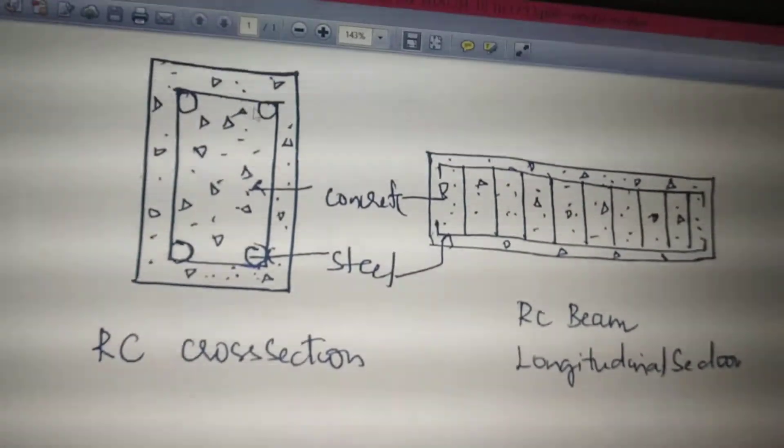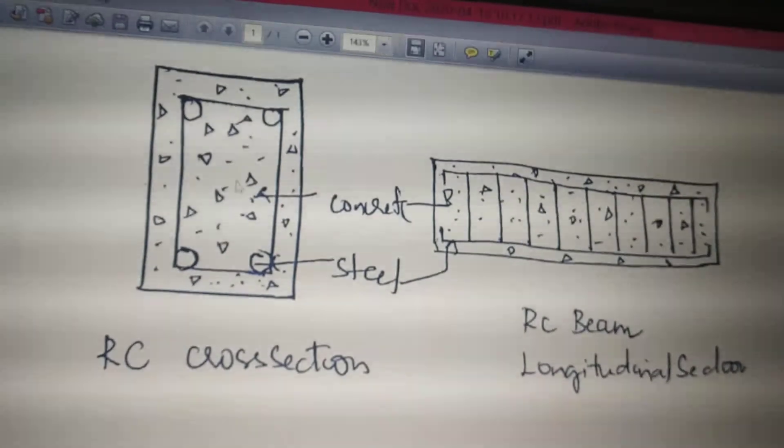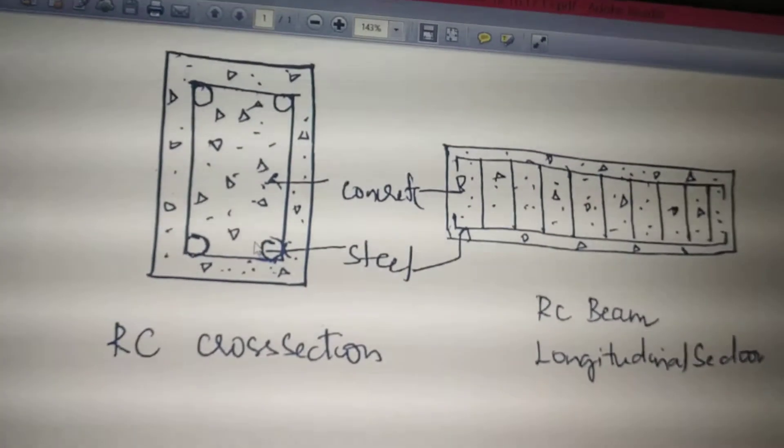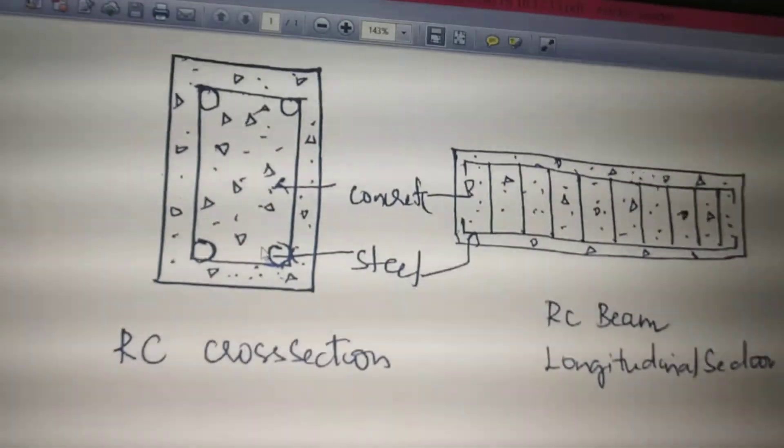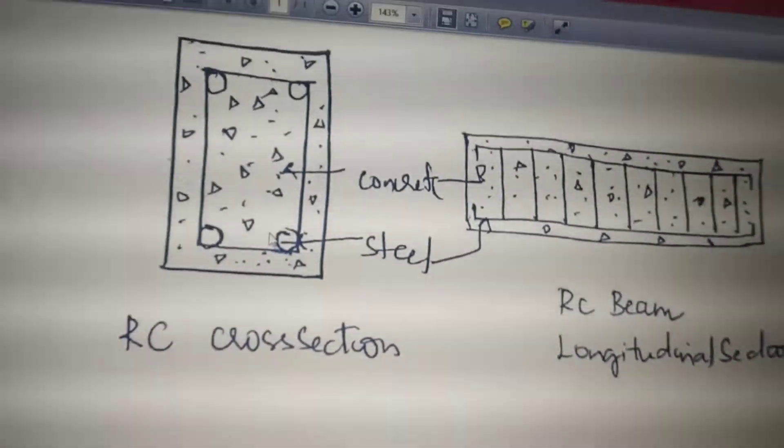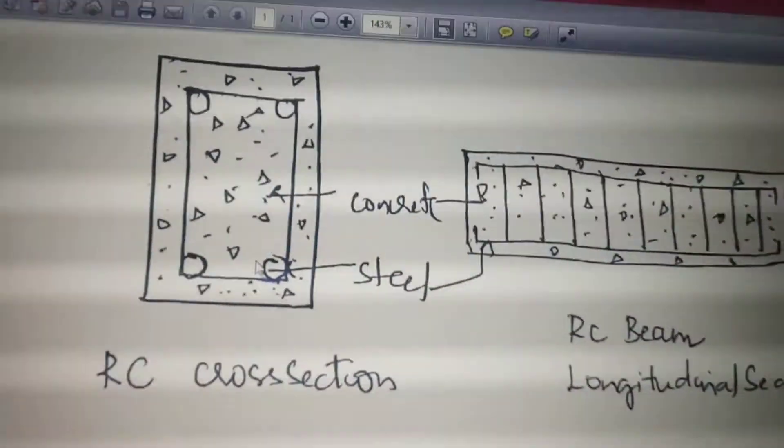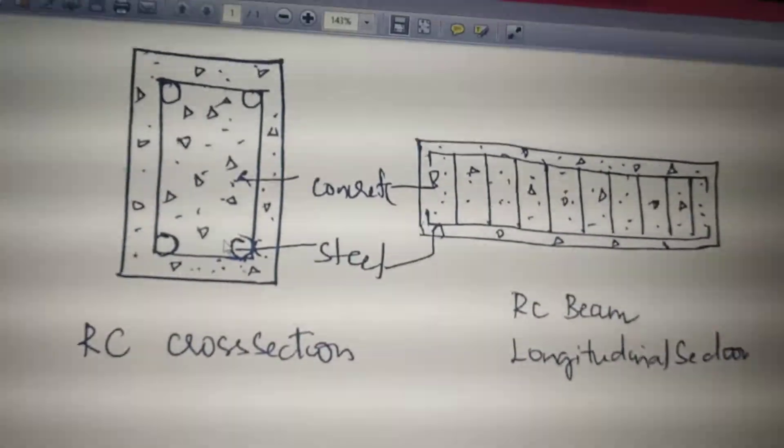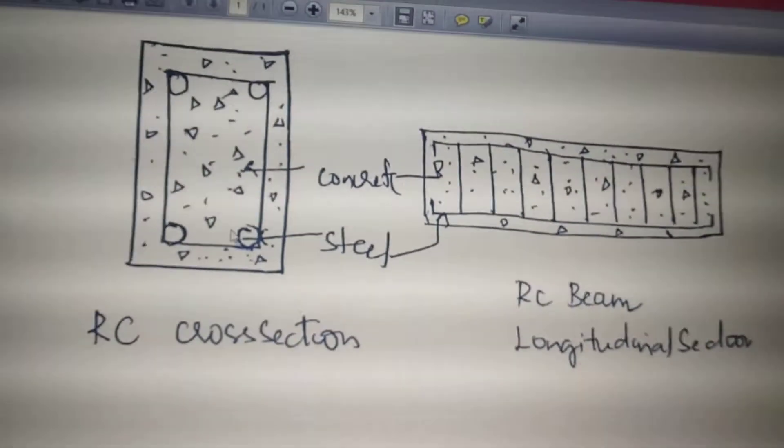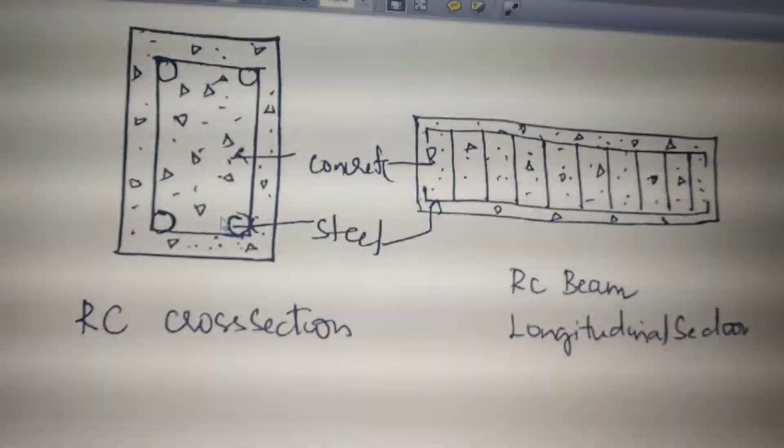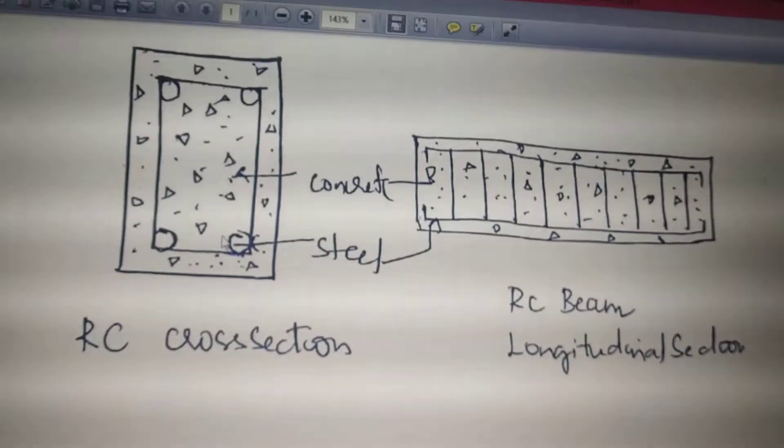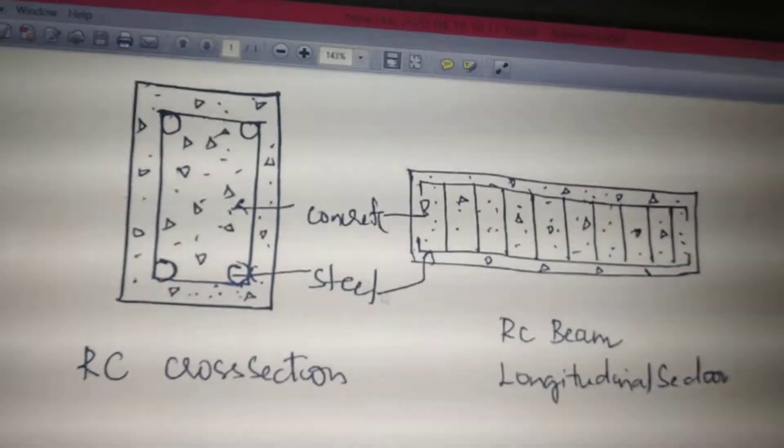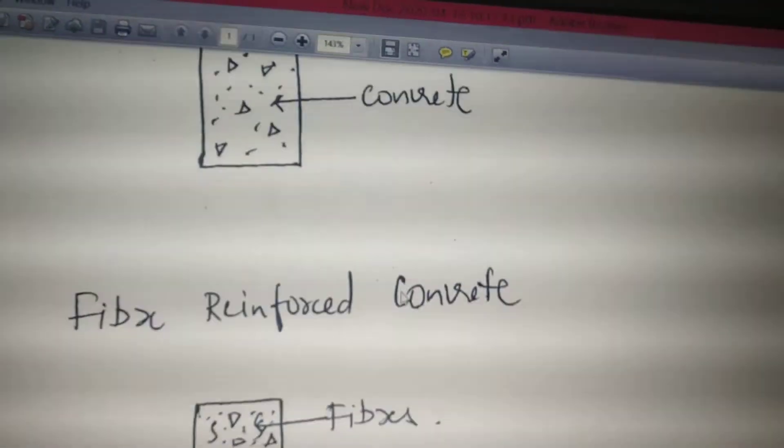Reinforcement is provided in the form of stirrups as shear reinforcement, but still it has become insufficient to resist the various stresses acting over it. So in order to improve the various mechanical properties, it is necessary to distribute this reinforcement uniformly throughout the cross section. Then the concept of fibers was introduced - this is the concept of fiber reinforced concrete.